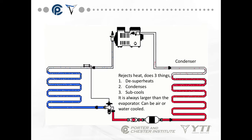The condenser is the next part. What it does — it actually rejects the heat. Our whole purpose of air conditioning is to take the heat from a place we don't want it, which is the inside of the building, and move it to a place where you do want it, which is outside. The condenser moves the heat out of the refrigerant into the outside environment — it desuperheats, condenses, and sub-cools.